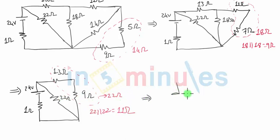So my new circuit will have the original battery here, 1 ohm resistance here, and 22 parallel 22, I will only show one single resistance which is of 11 ohms. This is 1 ohm and this is a 24 volts battery.